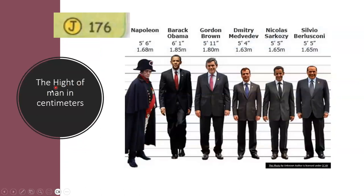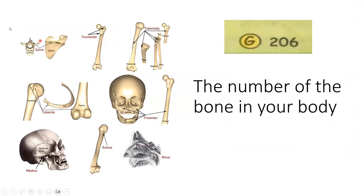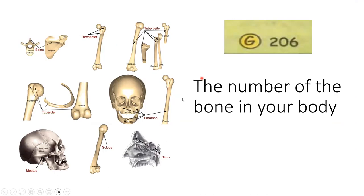The height of a man in centimeters: Napoleon is 168 centimeters and Barack Obama is 185 centimeters. The number of hairs on your head — we can't really count our hair, but they say we have 100,000 hairs on our head. The number of bones in your body: we have 206 bones.